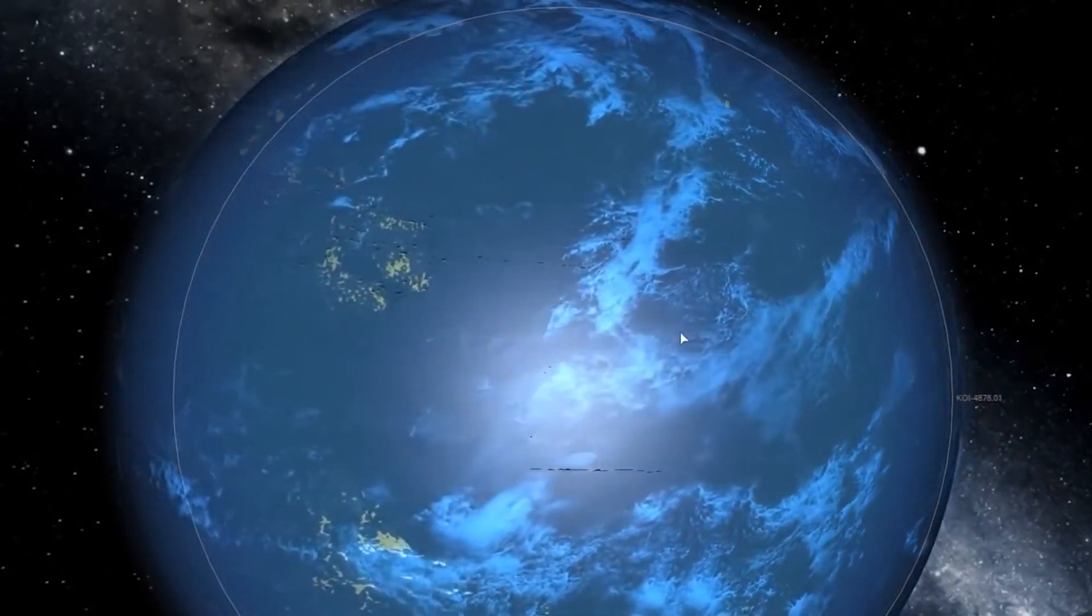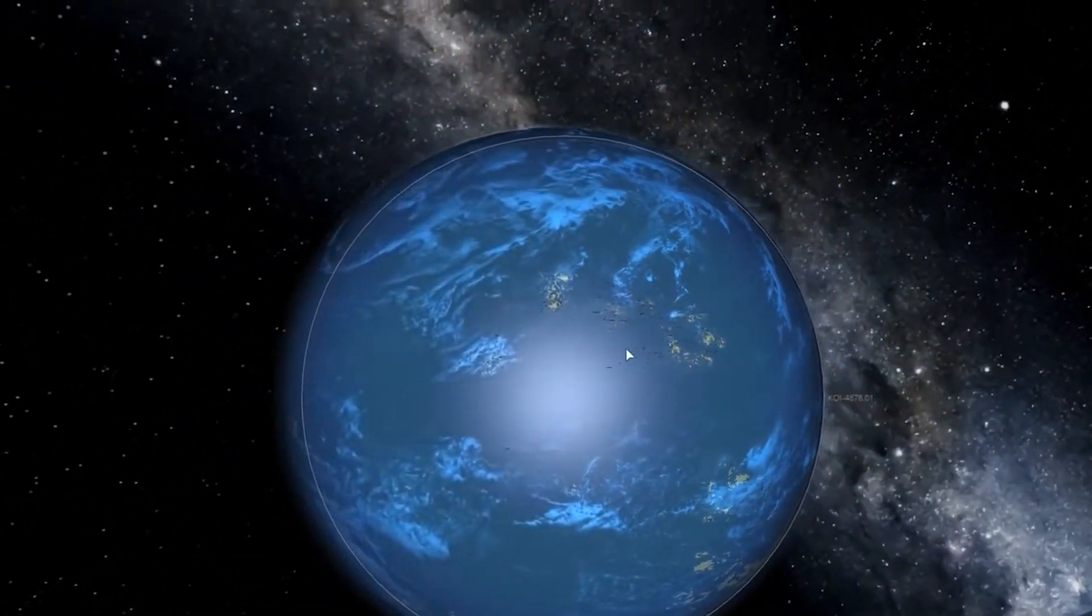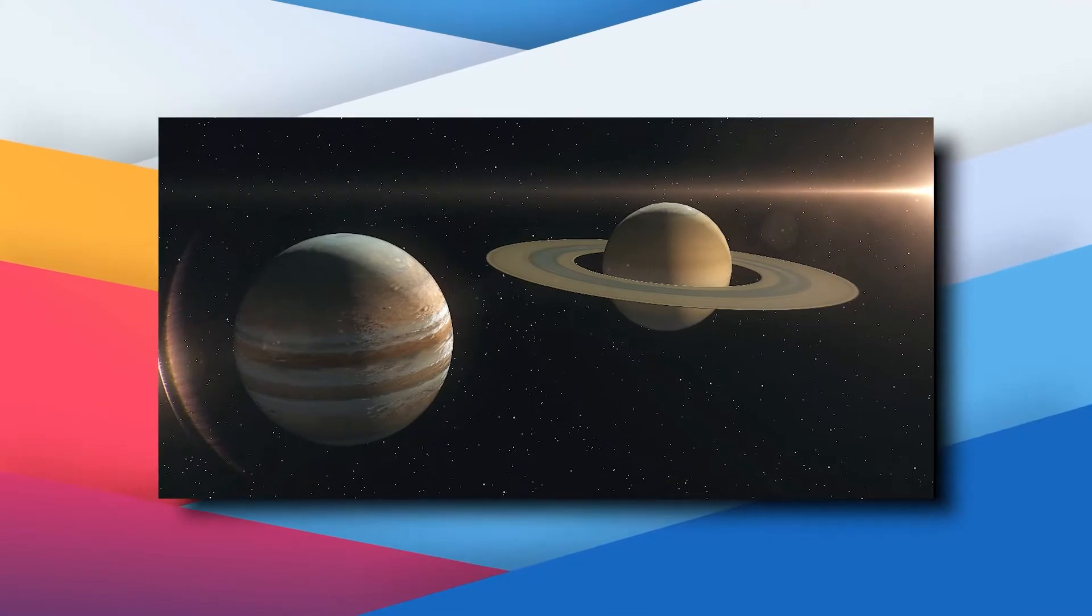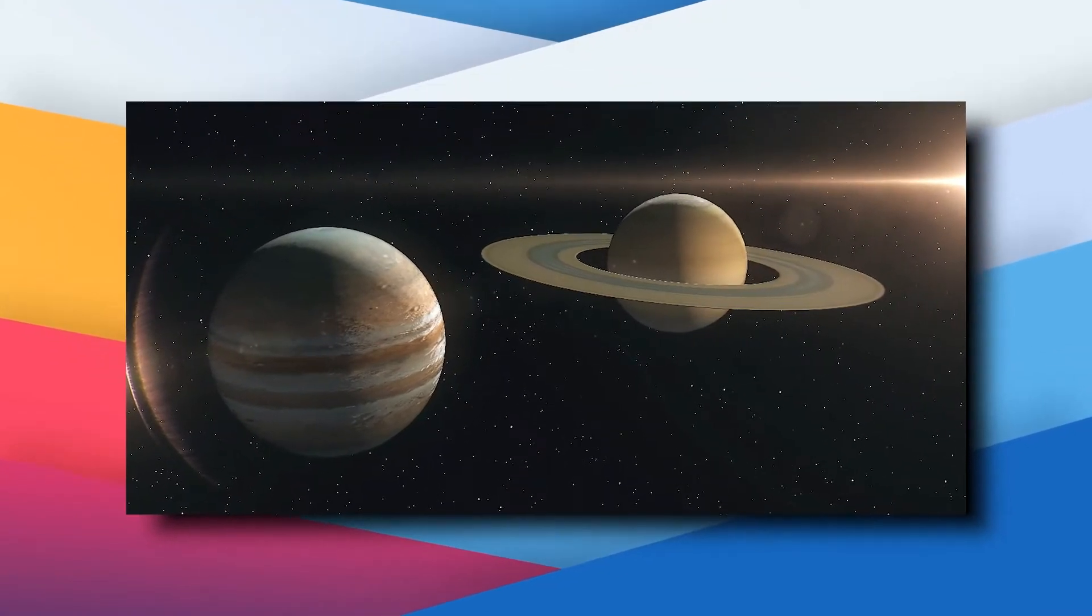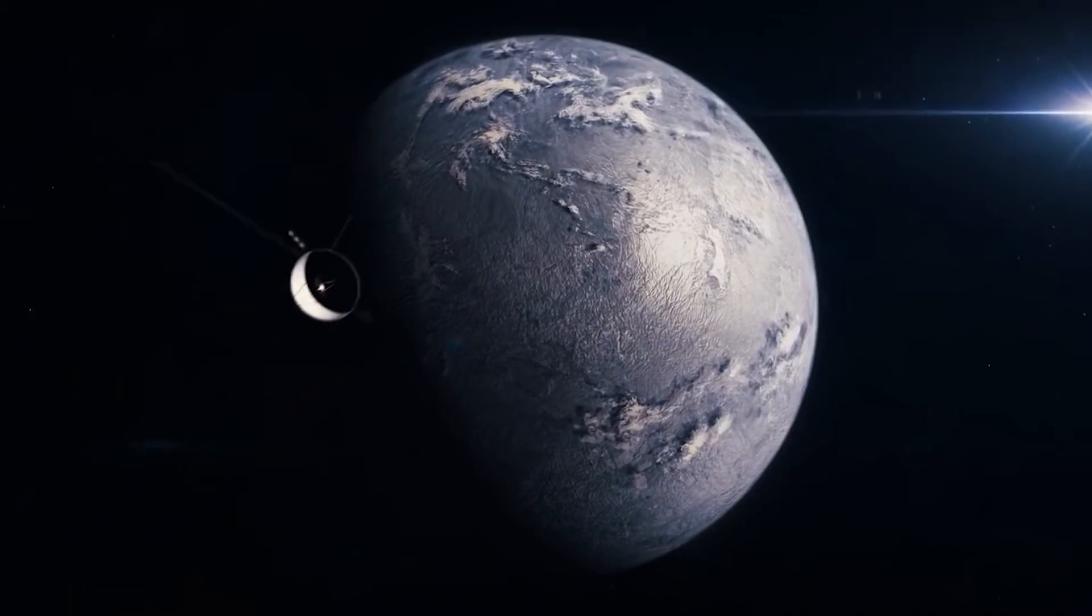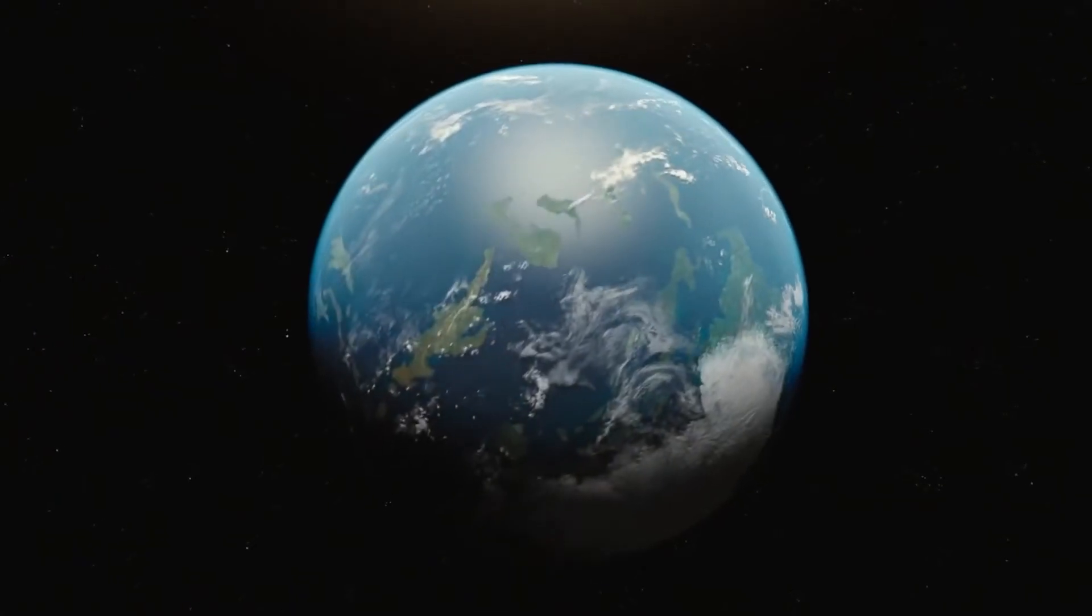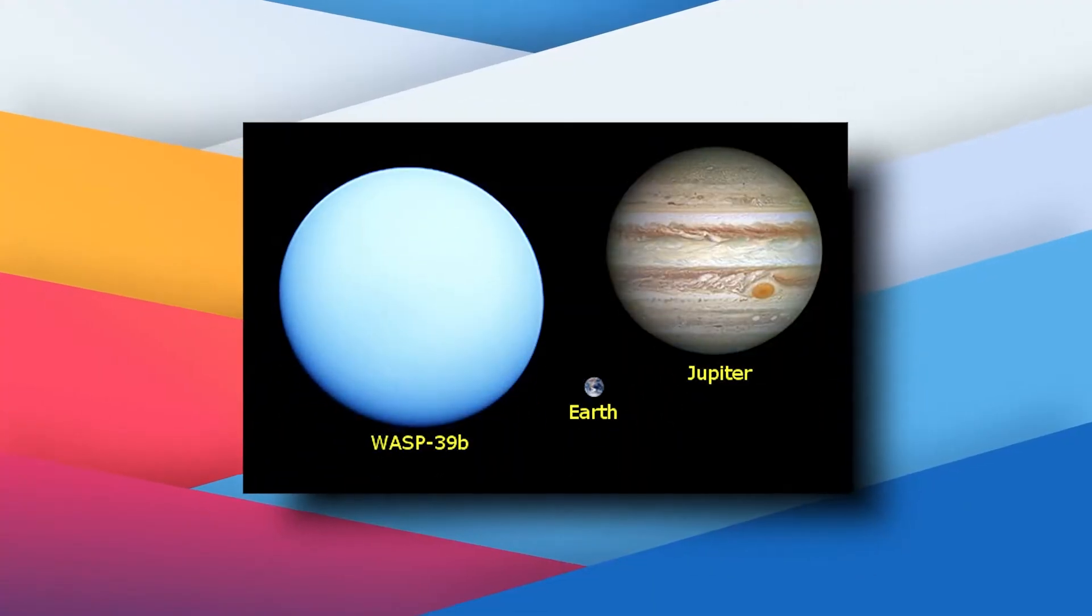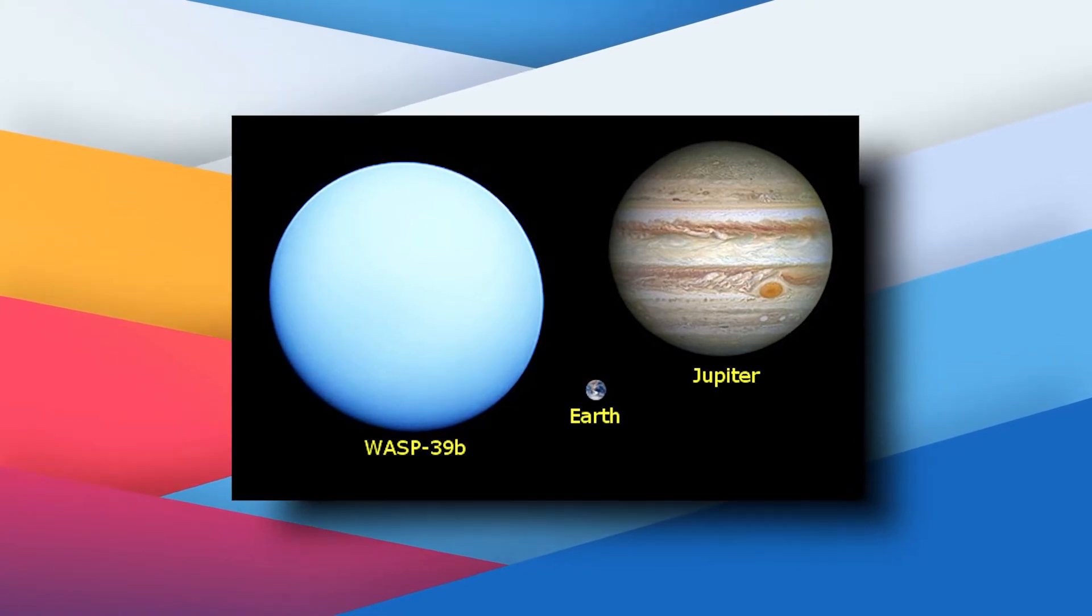Wasp 39b is a hot gas giant with a mass roughly the same as Saturn and diameter 1.3 times that of Jupiter. Its extreme puffiness is related in part to its high temperature. This floating rock, contrast to the cooler, more compact gas giant in our solar system, orbits very close to its star.